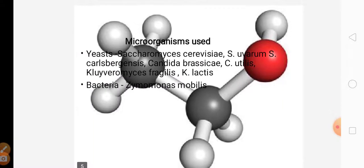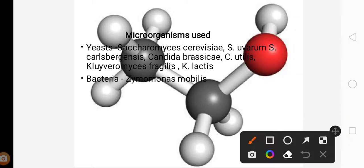Next comes which microorganisms are used for the production of ethanol. Usually yeasts and bacteria are widely used. Yeasts include Saccharomyces cerevisiae, Saccharomyces uvarum, Saccharomyces carlsbergensis, Candida brassicae, Candida utilis, Kluyveromyces fragilis, and Kluyveromyces lactis. These are the yeasts that are used for the production of ethanol.